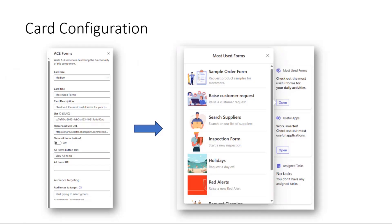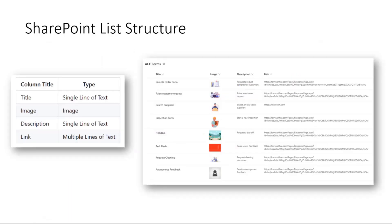And basically that's the configuration that you have to do. You just have a title for the card, a description, the site URL, and the ID of the list, and that's it. You just add the URL of your Microsoft Forms or the URL of your Power Apps and that's going to work.